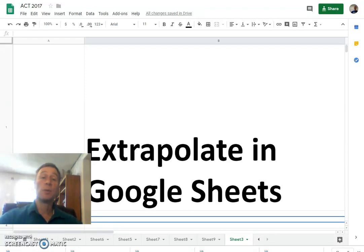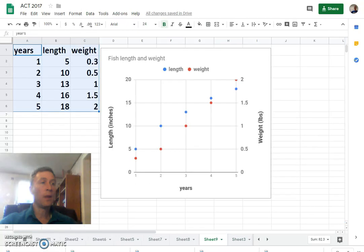Hi, this is Stuart Shumway. This video clip explains how to extrapolate in Google Sheets. Extrapolate means to predict what is going to happen in the future based on data.